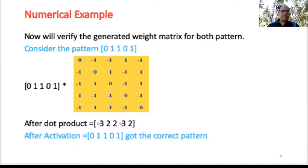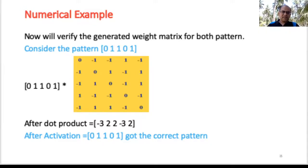To verify the generated weights for the first pattern [0, 1, 1, 0, 1], perform matrix multiplication — the dot product of the weight matrix with the pattern vector. You get [−3, 2, 2, −3, 2]. After applying the activation function based on the threshold, you get the correct pattern back — simple. For the second pattern [1, 0, 1, 0, 1], the dot product gives [2, −3, 2, −3, 2], and applying the activation function again yields the correct pattern.